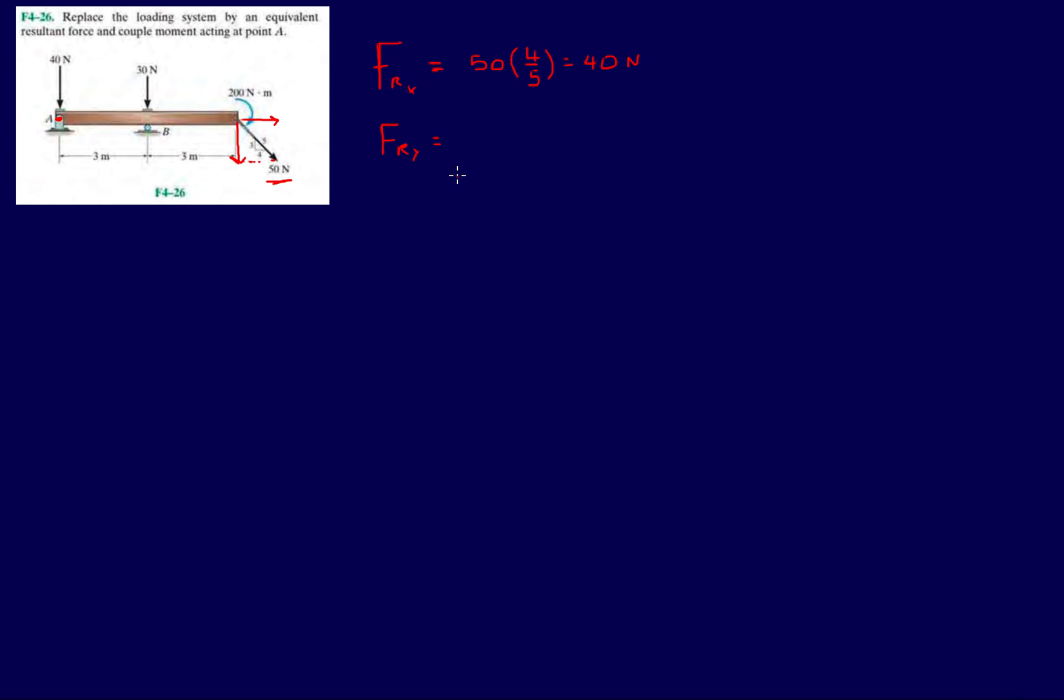Which gives you 40 Newtons. So that's the resultant force in the X direction. Now in the Y direction I have minus 40, and I've said it in the previous video I usually say this is X and this is Y. Positive going up is positive, going to the right is positive. And also my moment if it's counterclockwise is positive.